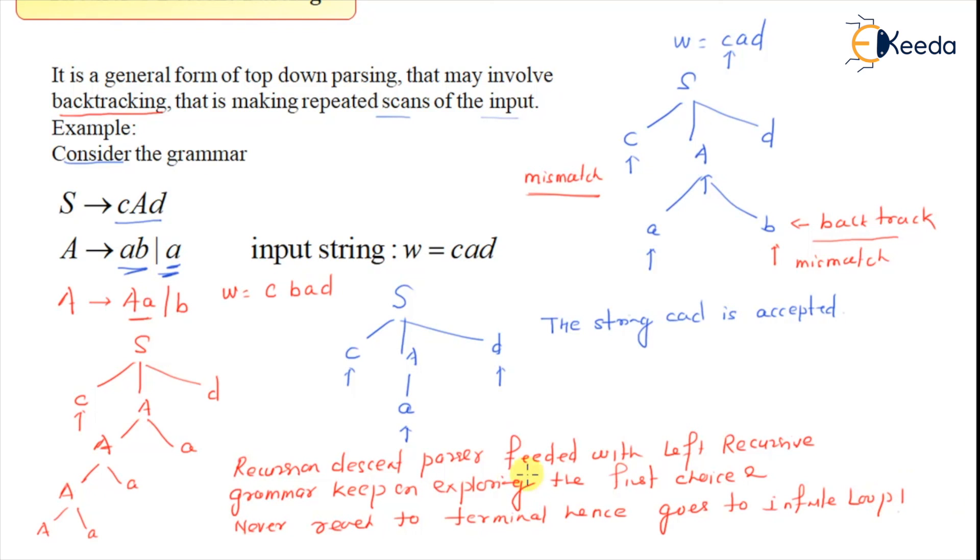That is the reason why we said that the top-down parser does not require left recursion or left recursion should not be present. Because the way the top-down parser works, it wants the terminal here so that it can do the mismatch and then perform backtracking. But the moment the grammar is left recursive, it's stuck into a while loop. At least recursive descent parser stuck into this while loop. The reason is very simple: it will keep on exploring capital A, small a, without going to the second choice that is B.